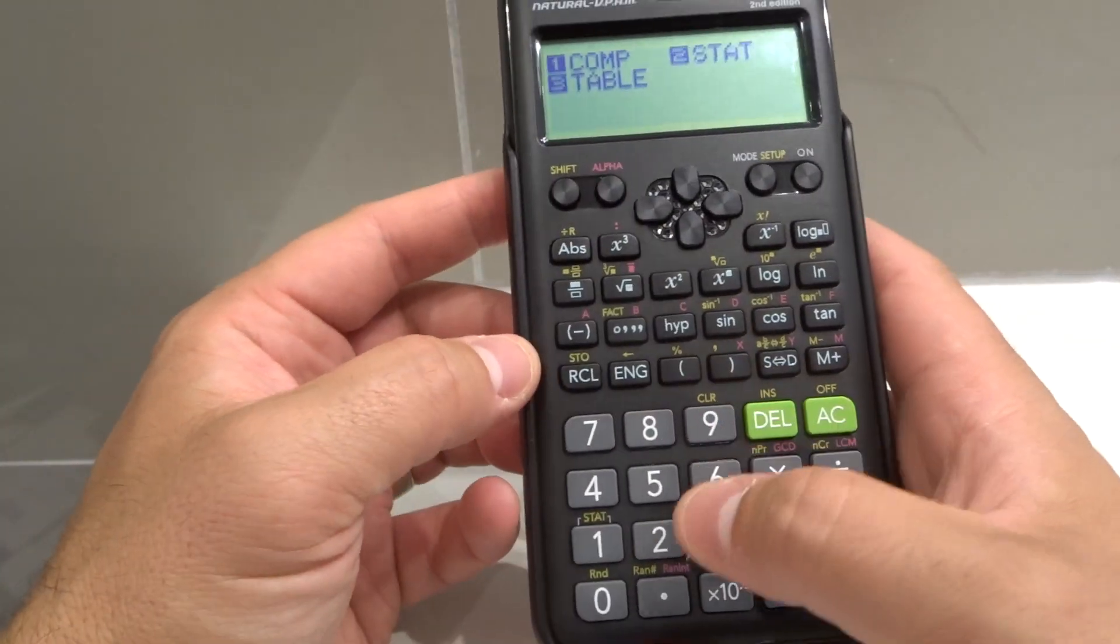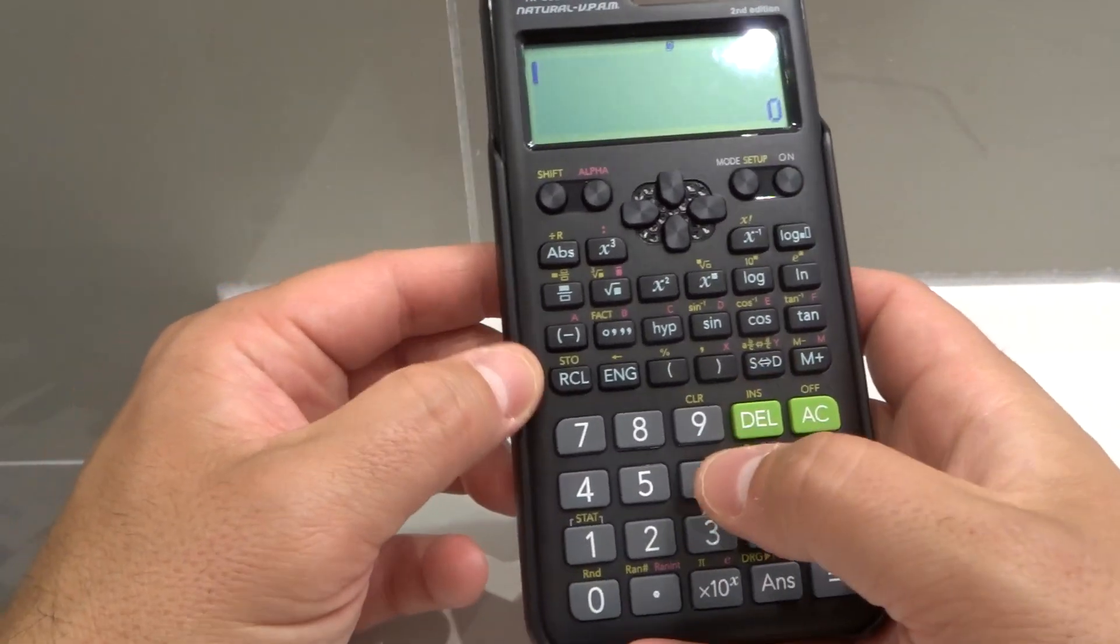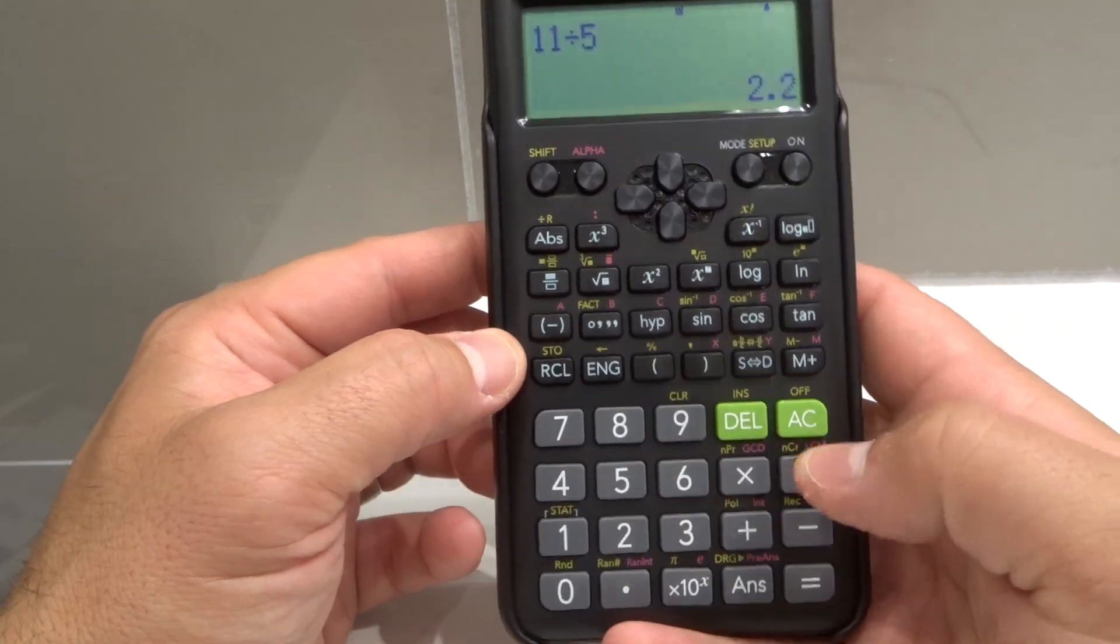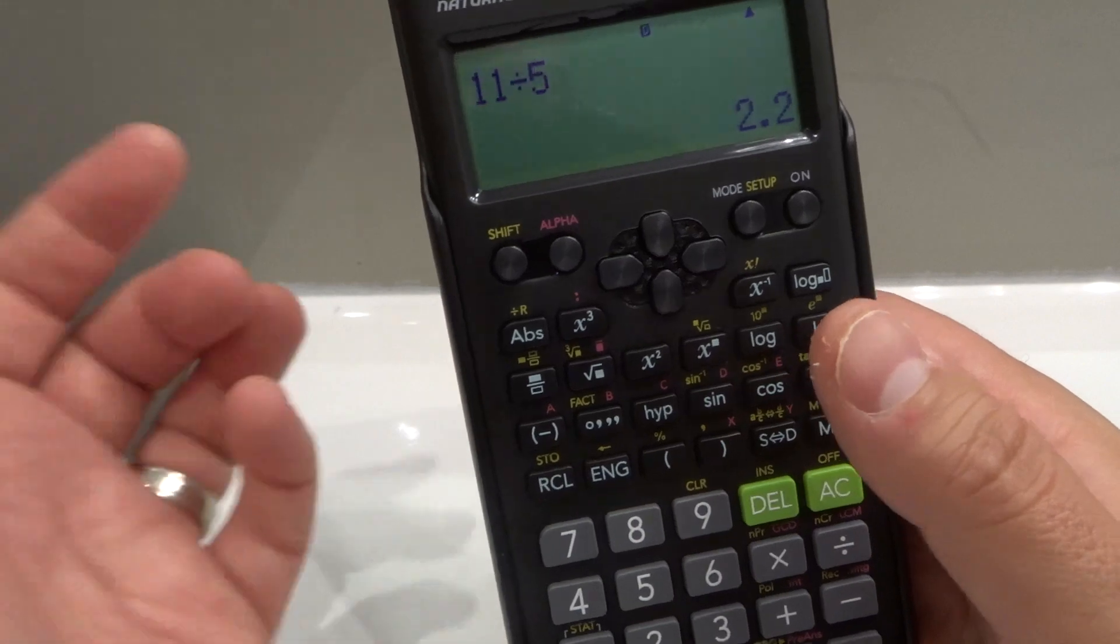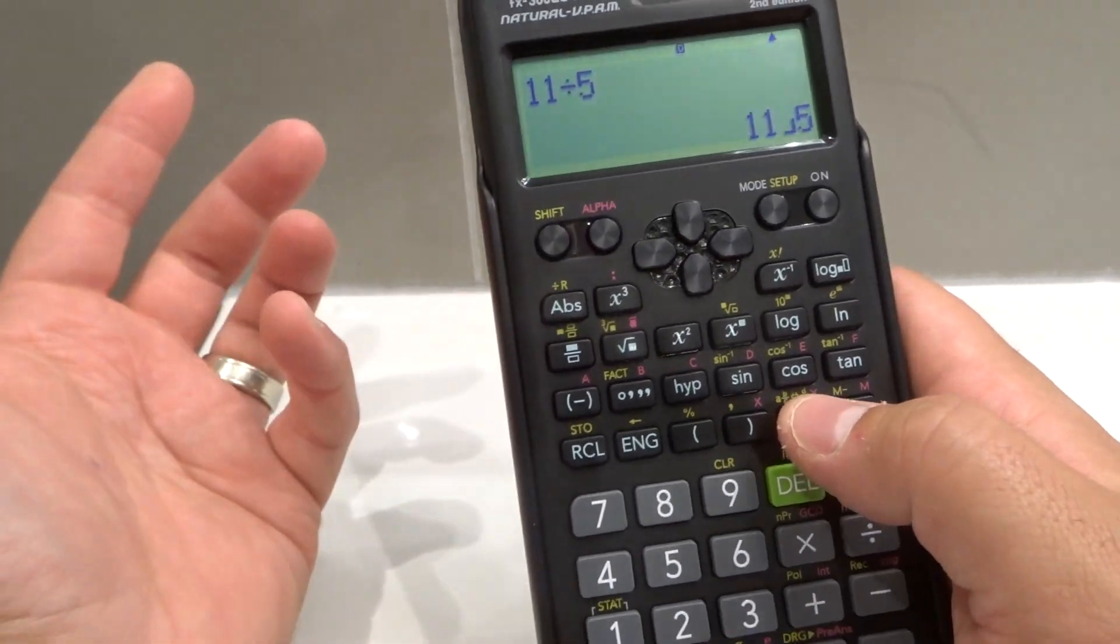I'm going to go back to just regular computation mode, which is number one, which is like your main mode. If you want to do something like 11 divided by 5, it's going to give you the answer right over there. 2.2. I have it set in decimal format, just so it's clear. You can also go back to standard format like that. Very simple.